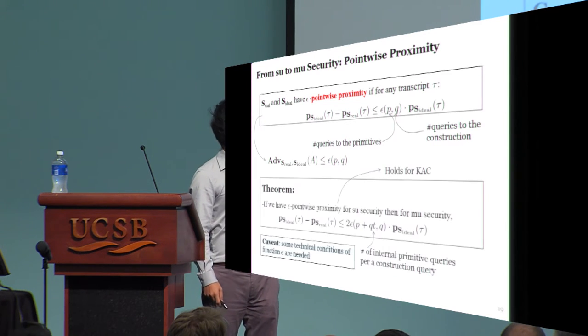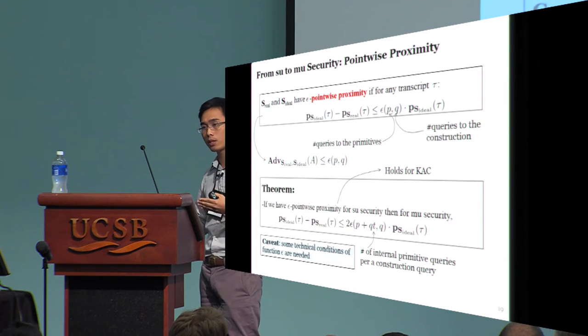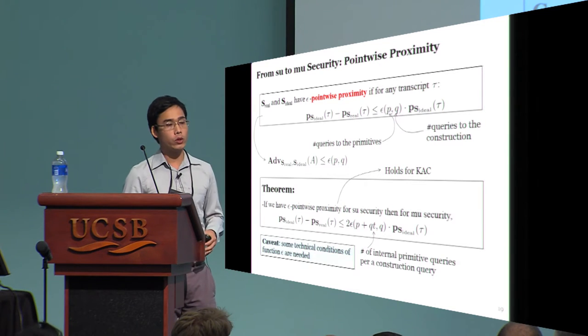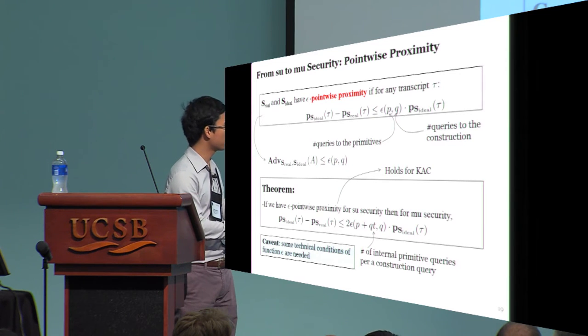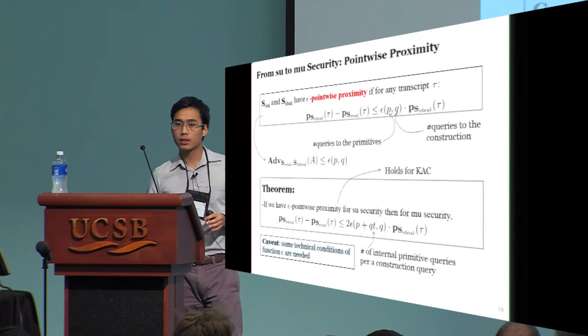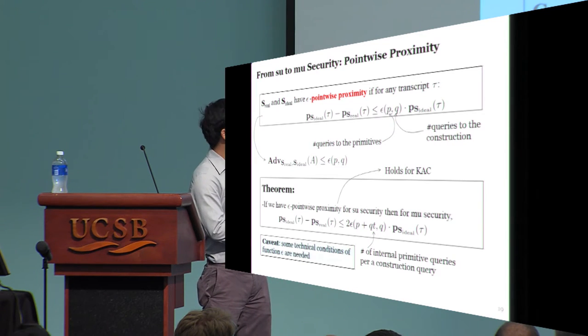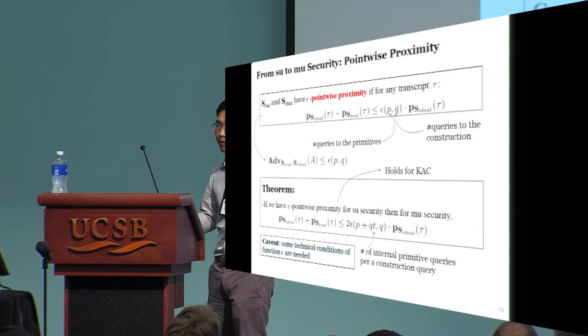Our result says that if you can establish pointwise proximity for single user security, then you immediately get a similar bound for multi-user security. I stress that this result needs some technical conditions on the function epsilon, but these conditions are mild, and therefore often met.